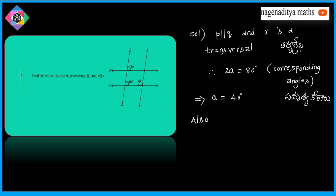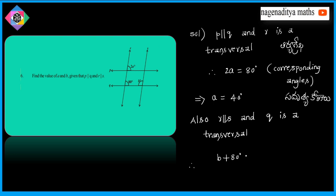Also, R is parallel to S and Q is a transversal. Therefore, B plus 80 is equal to 180 degrees, because the sum of interior angles on one side of the transversal is 180 degrees. So, B is equal to 180 minus 80, which is 100 degrees.